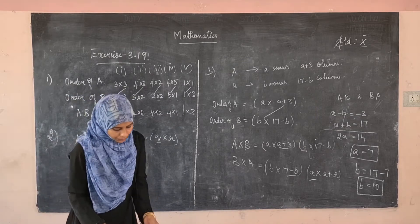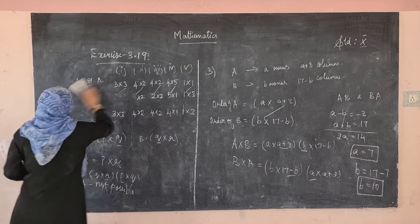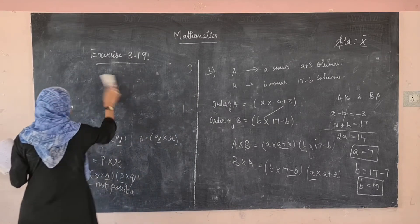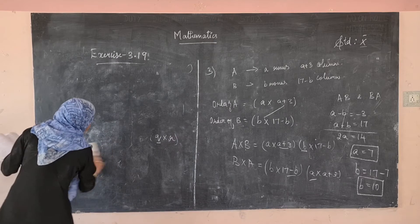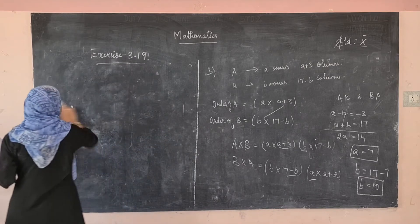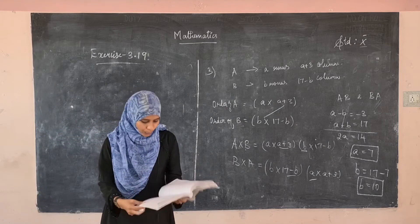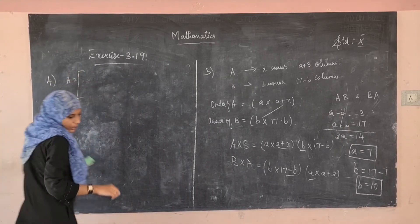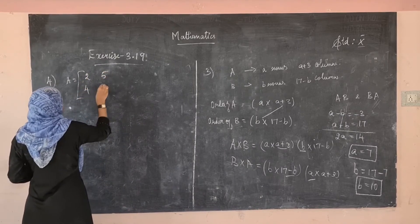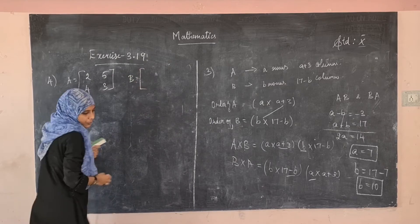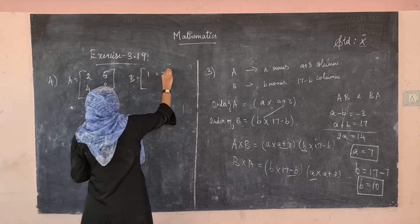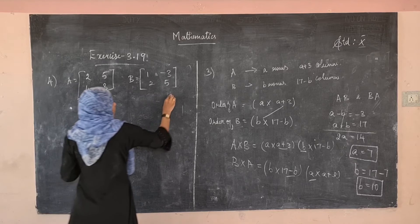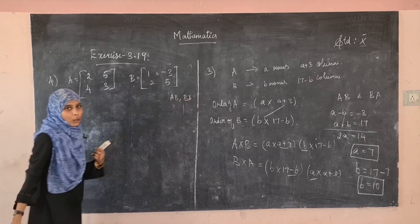The fourth sum gives two matrices A = [2, 5; 4, 3] and B = [1, −3; 2, 5]. We have to find AB and BA, and check whether AB equals BA. Both matrices are of order 2×2, so the resulting matrix AB will be of order 2×2 with 4 elements.